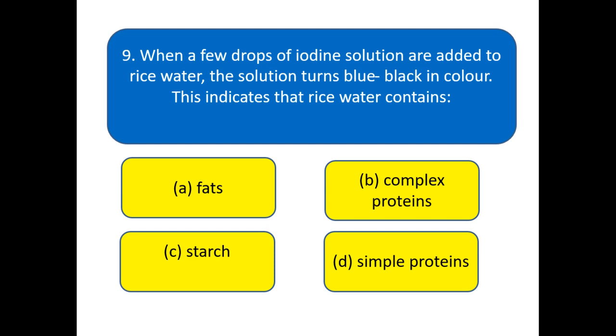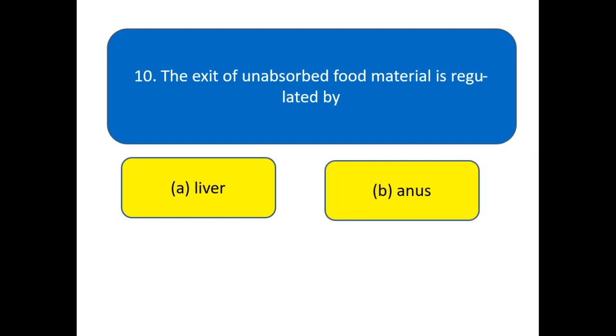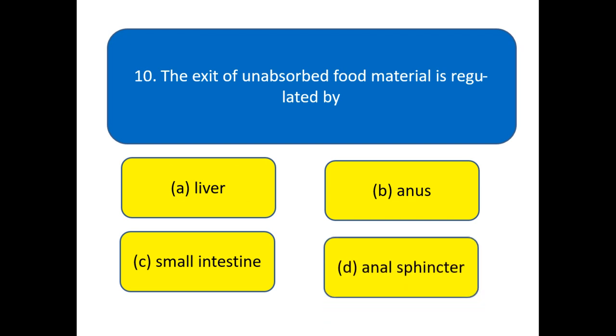Here we go for the next question. The exit of unabsorbed food material is regulated by? Options: liver, anal sphincter, small intestine. These are the options for this question. Here we go for the answer key.